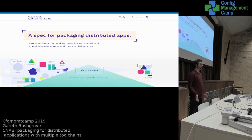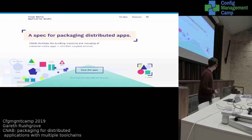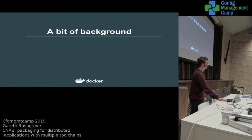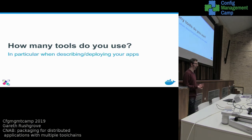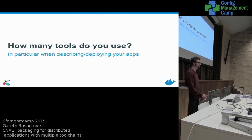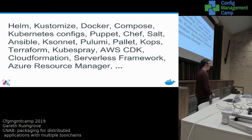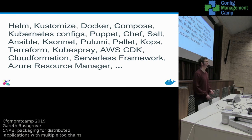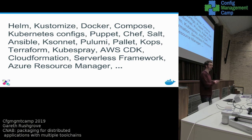CNAB is a spec for packaging distributed applications, and it has a nice shiny website — feel free to go to cnab.io. One of the questions that comes up in any infrastructure management conversation is: how many tools do you actually use to do your job, to manage a system end-to-end? The answer is a lot. This conference is a good example — there's a talk about half or most of these tools, and a lot of talks will talk about multiple tools.